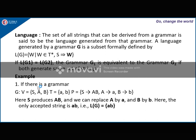For example, if grammar G2 has V = {S, A, B}, T = {a, b}, and productions S derives AB, A derives a, B derives b — then S produces AB, and we can replace A by a and B by b. The only accepted string is AB, so L(G) = {ab}.